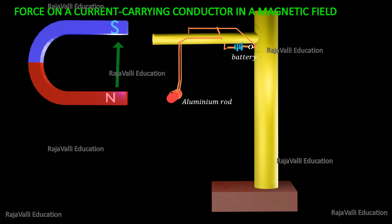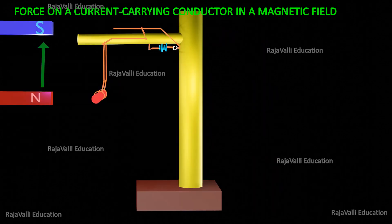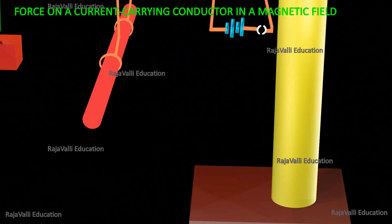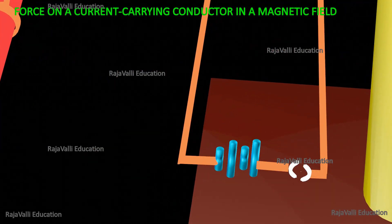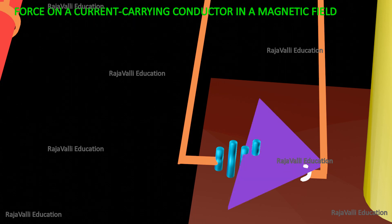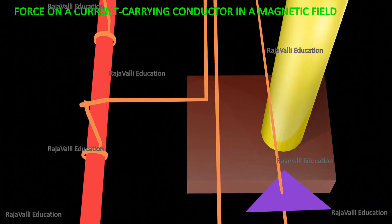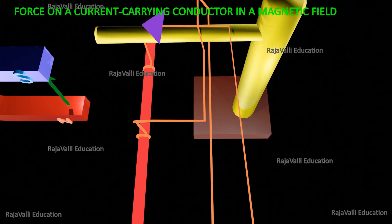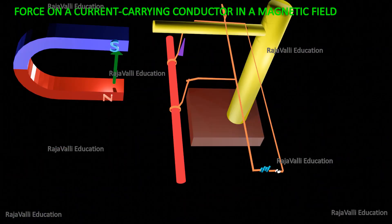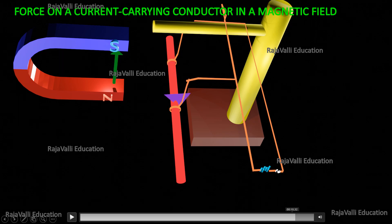So the magnetic field moves from the north pole to the south pole. The experiment setup is complete. Next we close the circuit by plugging the key, so the current flows from the positive terminal to the negative terminal through the aluminum rod. The rod will be deflected, and the direction of the deflection can be explained by Fleming's left-hand rule.